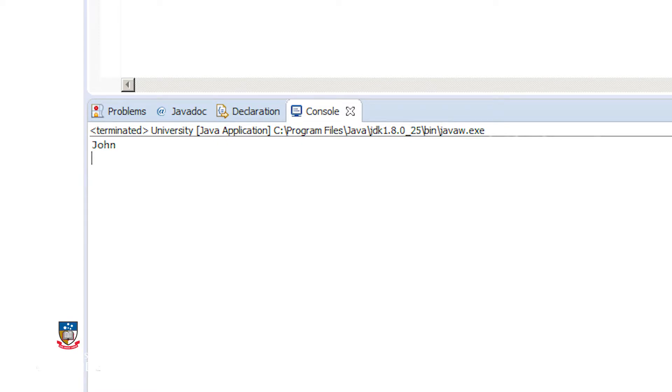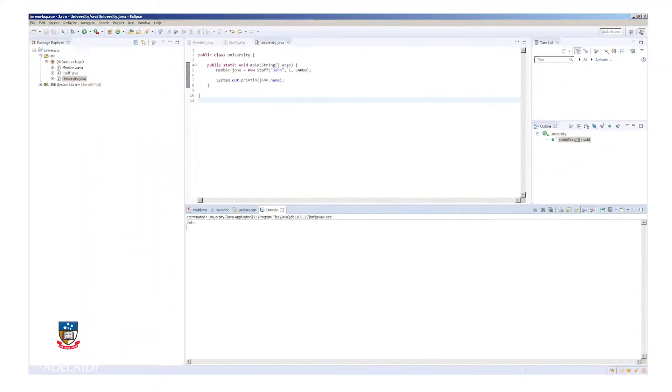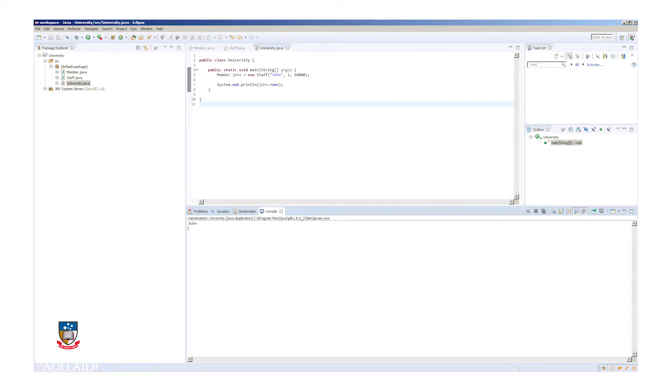As you can see, it is really easy to create inheritance relationships. I could now build upon what I have done so far, introducing the student class that extends member, and then contains a string for the degree and an array to store a list of enrolled courses. You will have the opportunity to do this yourself in an exercise. Let's continue.